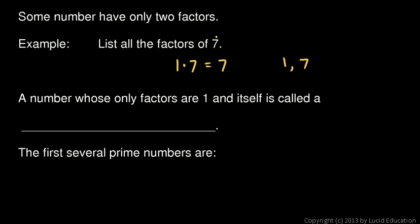And note that we're trying to find factors of 7, and the only factors we find are the number 1 and itself. And a number whose only factors are 1 and itself is called a prime number.